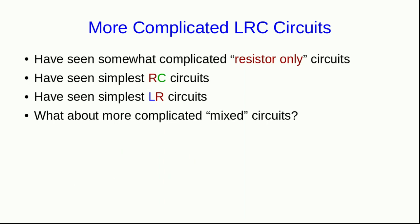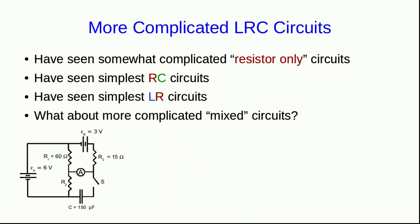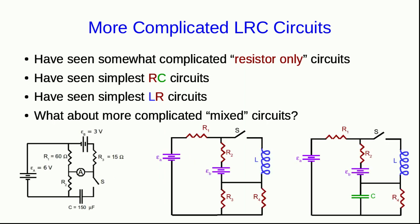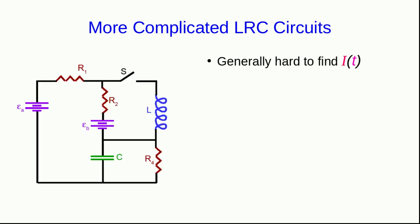But what about more complicated mixed circuits — things with all three of resistors, capacitors, and inductors? Well, in general, for these circuits it's hard to find the current as a function of time. But there are two times when it's easy to find all the currents.